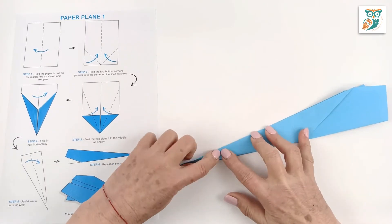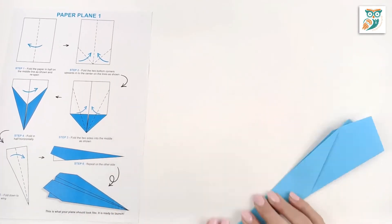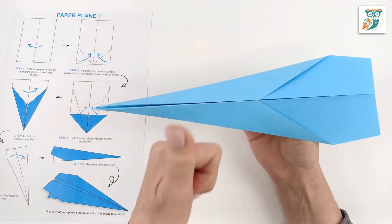Now we're going to do the second side. Make sure all those edges are nice and crisp. And there we go. That's our first airplane.